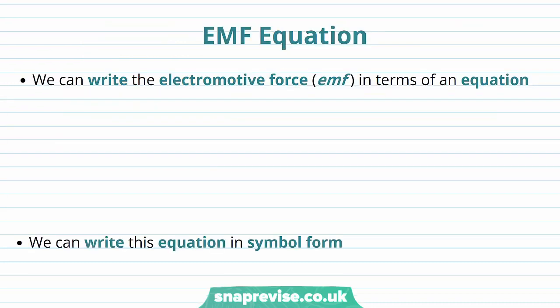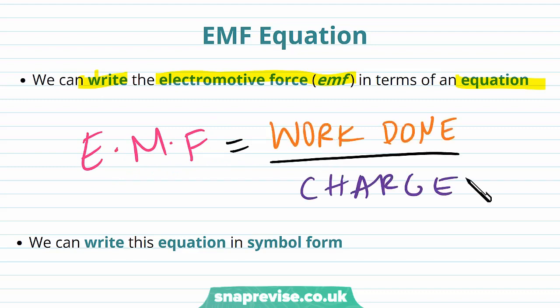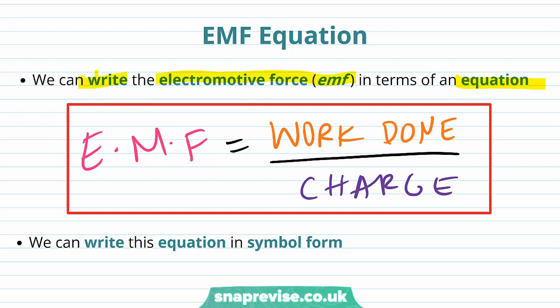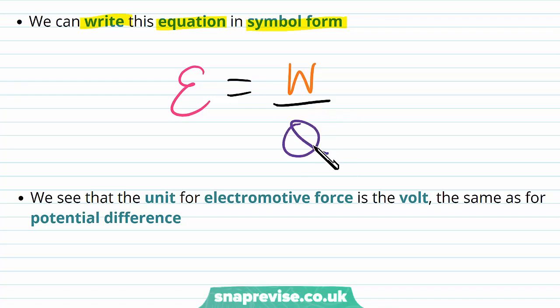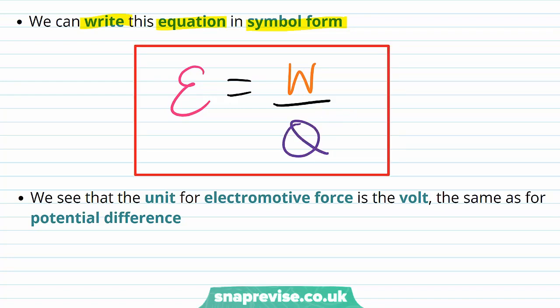Now we're going to look at an equation for EMF. We can write the electromotive force EMF in terms of an equation: the EMF equals the work done divided by the charge. This is because we've defined the EMF as the work done per unit charge carrier that actually passes through the component, for example the battery. We can also write this in symbol form — the symbol for EMF is epsilon (ε), we represent work done with W and charge with Q, giving us ε = W/Q.